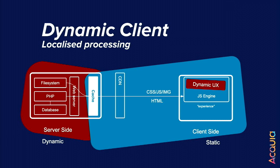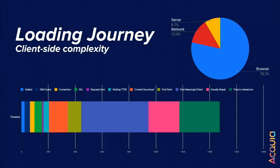Localised processing is sort of the next frontier we're now in the midst of pursuing. We want to start changing that model of everything being dynamic server-side and everything static client-side. We start to introduce dynamic UX experiences and leverage the processing power in people's client-side devices. Since the inception of Drupal things have changed — bandwidth's gotten better, phone processing power is a lot better. So there's good reason to say we can start distributing where that dynamic processing takes place. But it also means the loading journey starts to change as well.